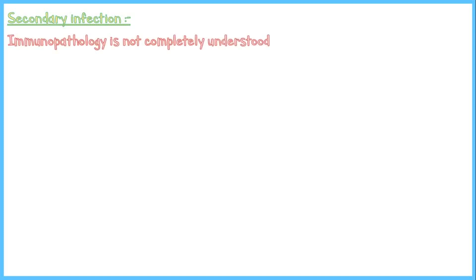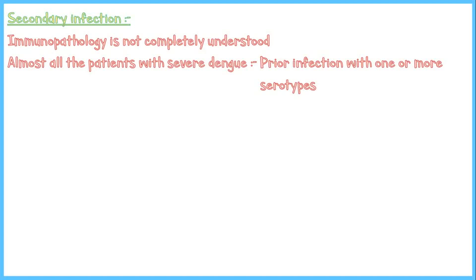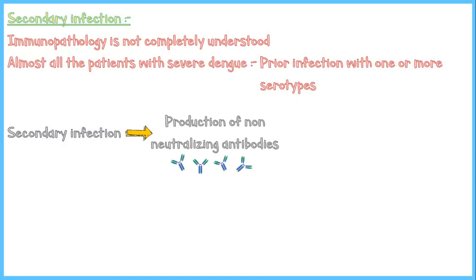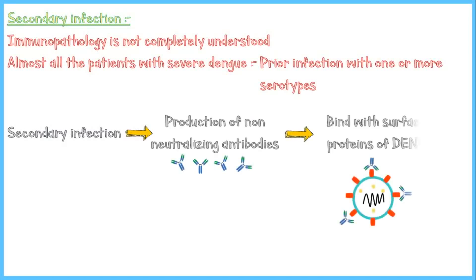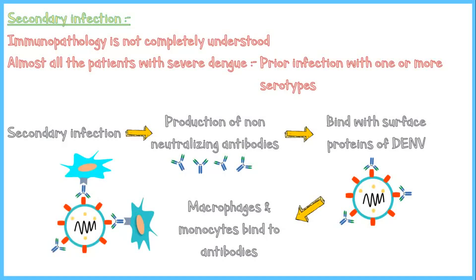Secondary infection with another serotype gives rise to a more severe clinical presentation. The immunopathology behind this condition is not fully understood, but the currently accepted theory is as follows: during a secondary infection, T cells produce small amounts of non-neutralizing antibodies directed to the surface proteins of dengue virus. When these antibodies bind to the surface proteins, macrophages and monocytes attach to the Fc portion of the antibodies in order to neutralize the virus and halt the infection.